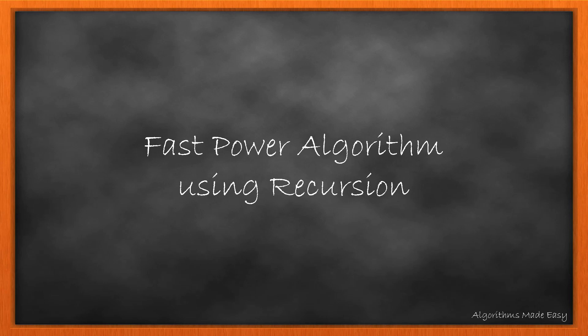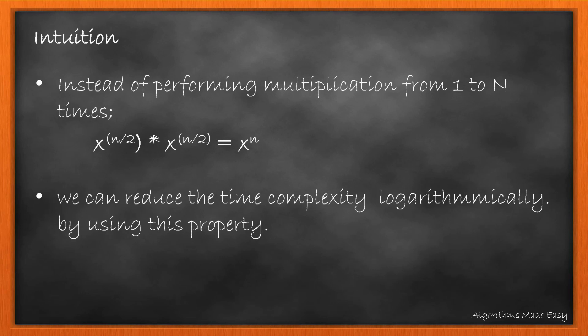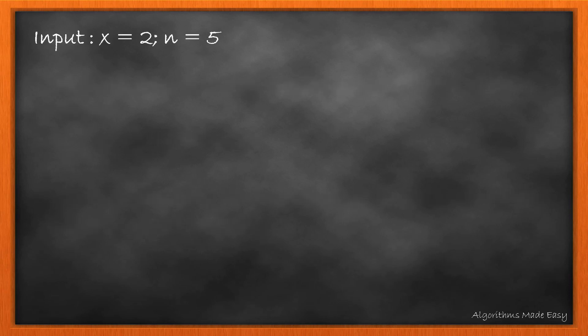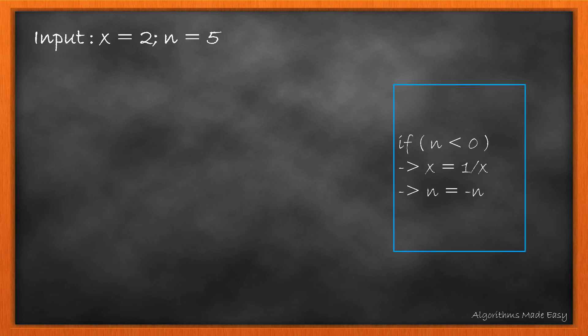The previous approach had a time complexity of O(n). For n equal to 2 raised to 31, this will take a lot of time. To reduce this, let's see another approach. We can break the problem into half and multiply it by the calculated half to achieve the complete result, reducing the time complexity logarithmically. Taking the input x equal to 2 and n equal to 5, we first convert the power to positive if it is negative. For our case, this won't apply.